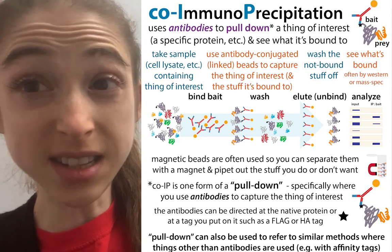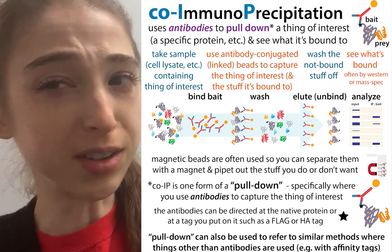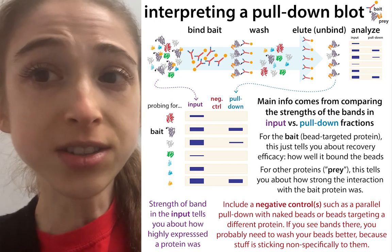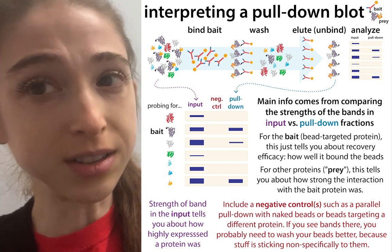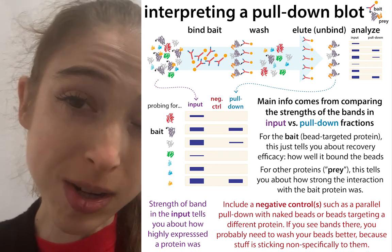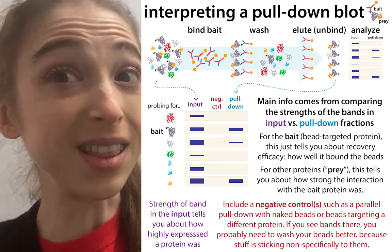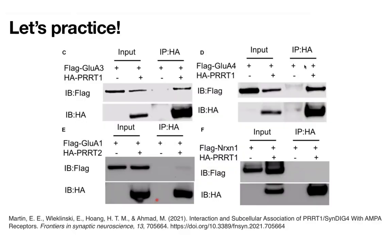Co-IP is a great way to see if proteins are interacting with one another, but their figures can get quite complicated. So here is a guide and some practice to interpreting some simple ones, as well as some advice for when they get more complicated. This is part of a longer video with more on Co-IP and other antibody-based methods, but today let's talk about interpreting the figures.